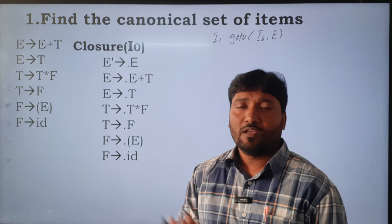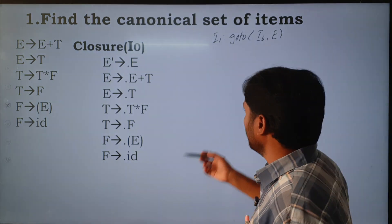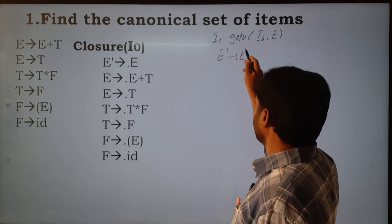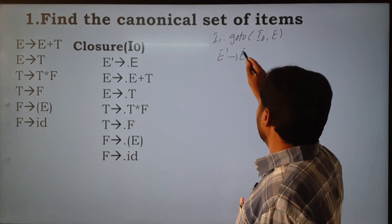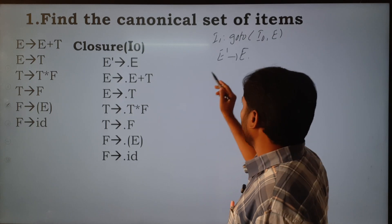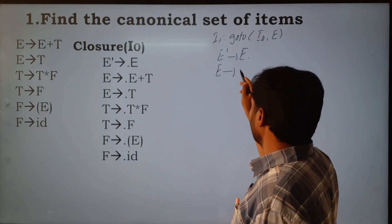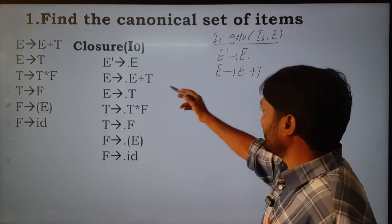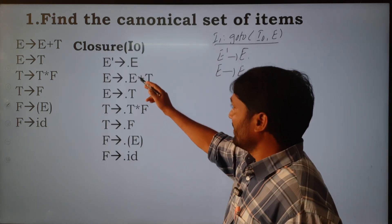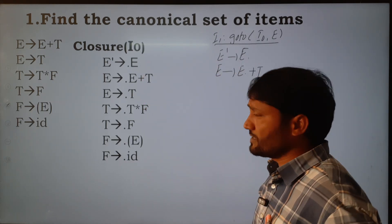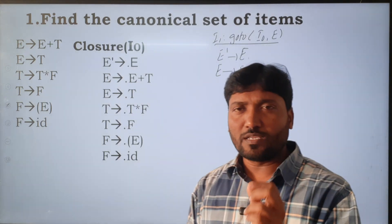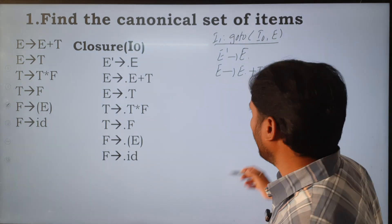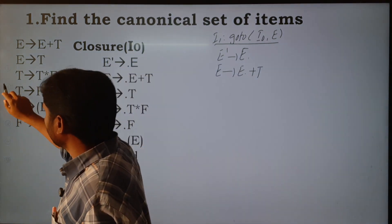If we apply the goto function for capital E, we shift the dot symbol one position to the right: E' → E. and there is one more production E → E.+T. This is I1 — we apply the goto function for capital E. The dot symbol is moved only one position to the right. This is called closure of I1.